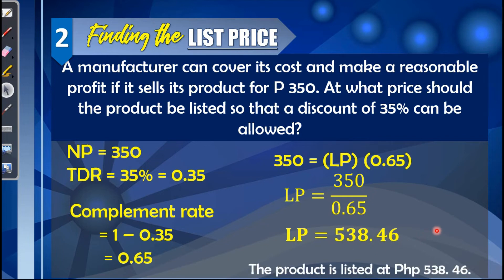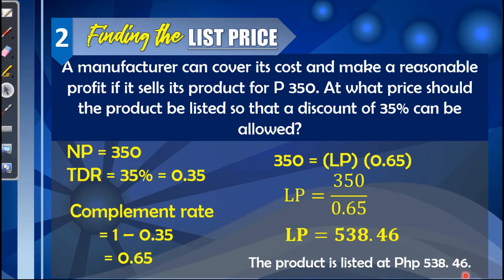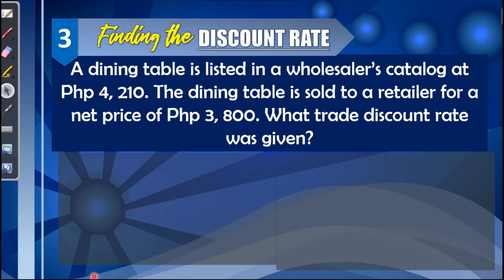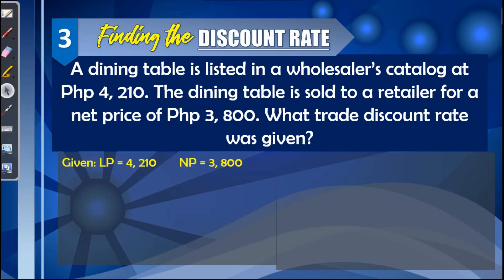Third example — finding the discount rate. A dining table is listed in a wholesaler's catalog at 4,210 pesos. The dining table is sold to a retailer for a net price of 3,800 pesos. What trade discount rate was given? Identify the given values: the list price is 4,210 and the net price is 3,800. To find the trade discount rate, we apply the discount method.